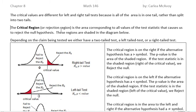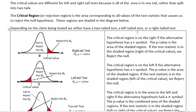The critical region or the rejection region is the area corresponding to all values of the test statistics that cause us to reject the null hypothesis. So take a look at the picture because saying it is more confusing than looking at it.